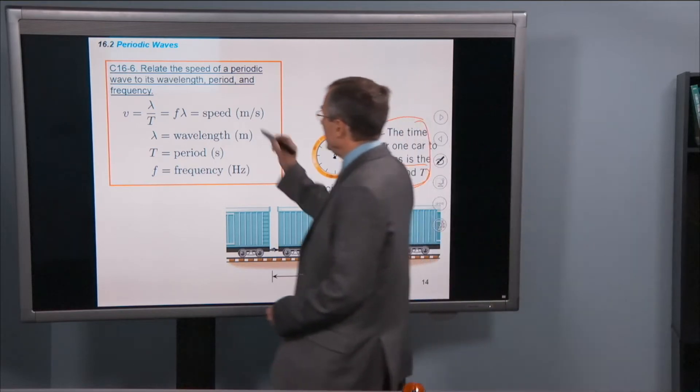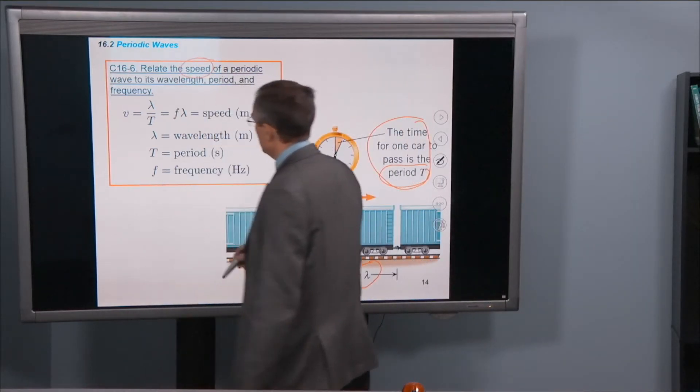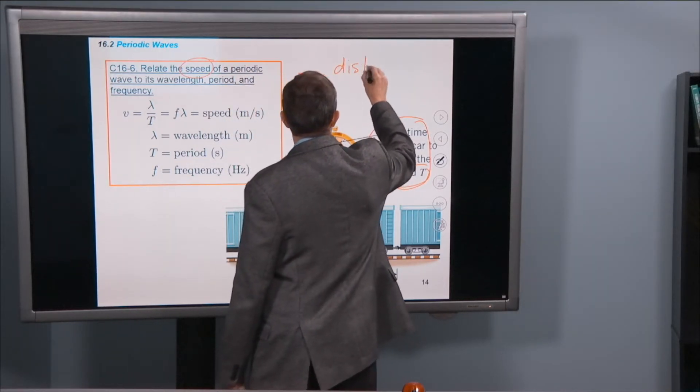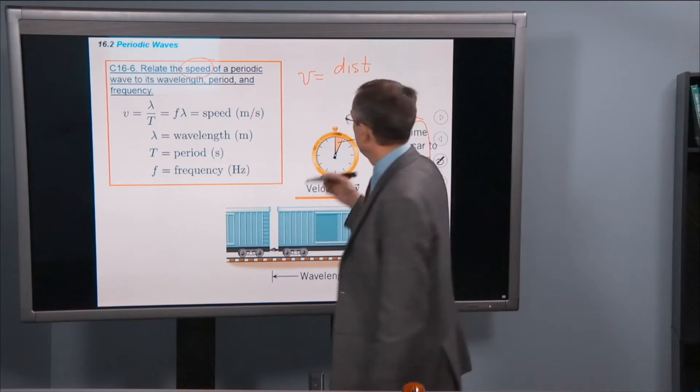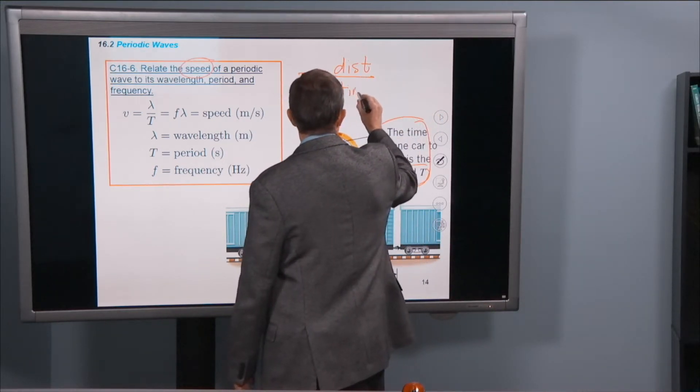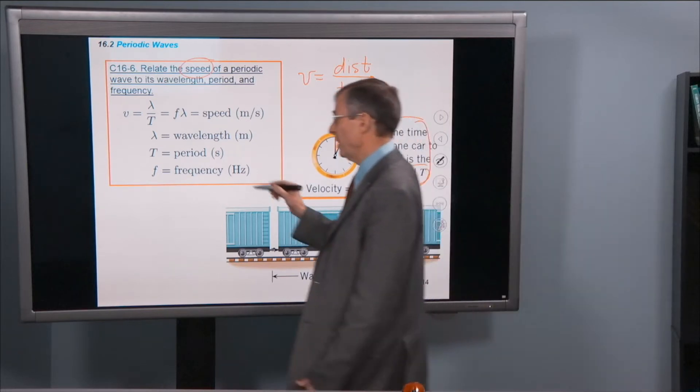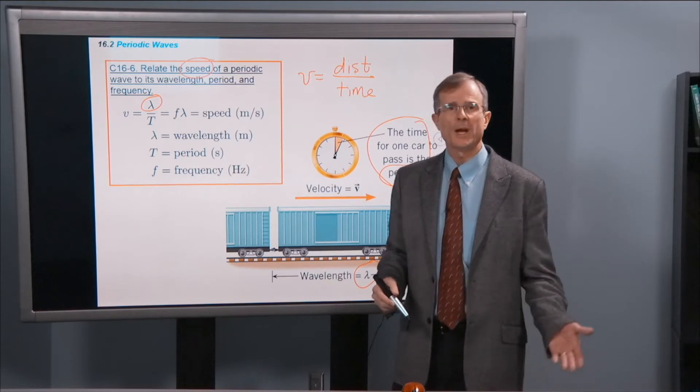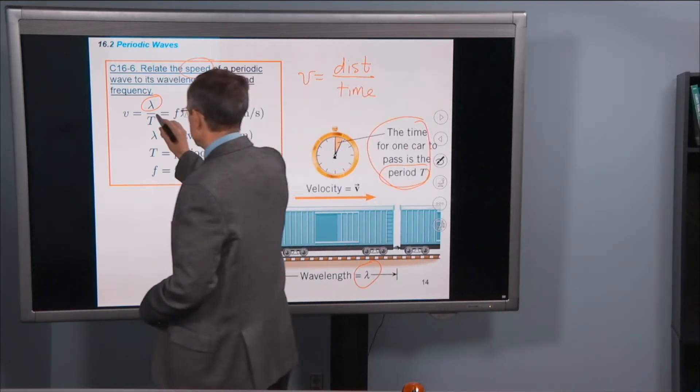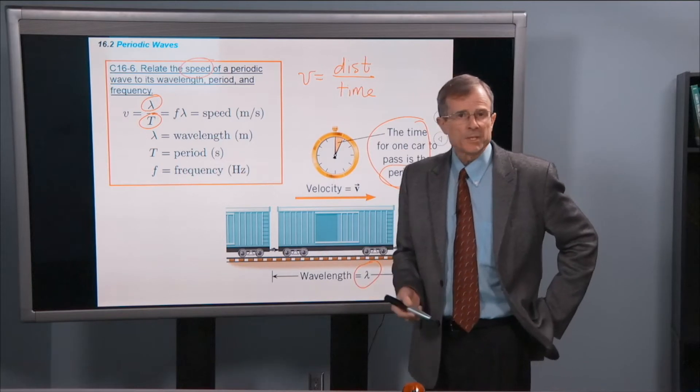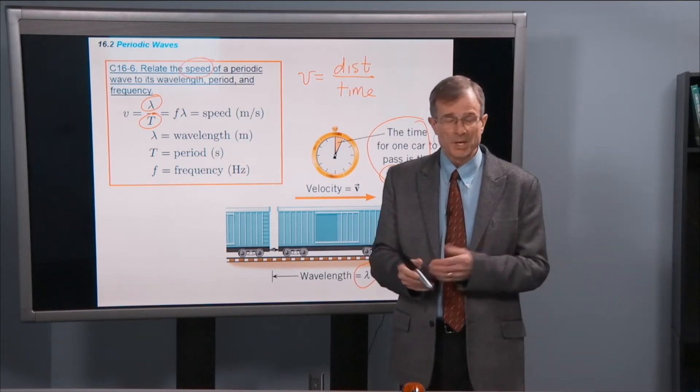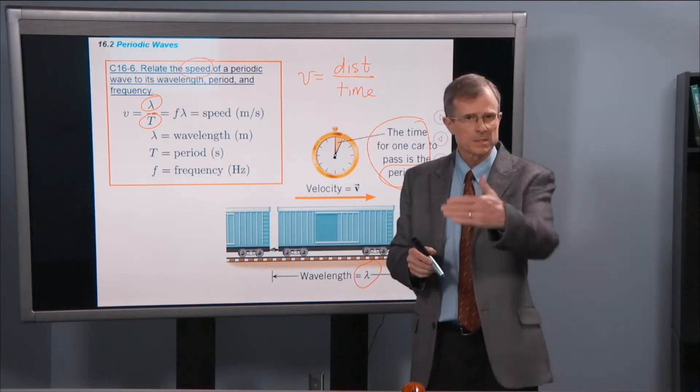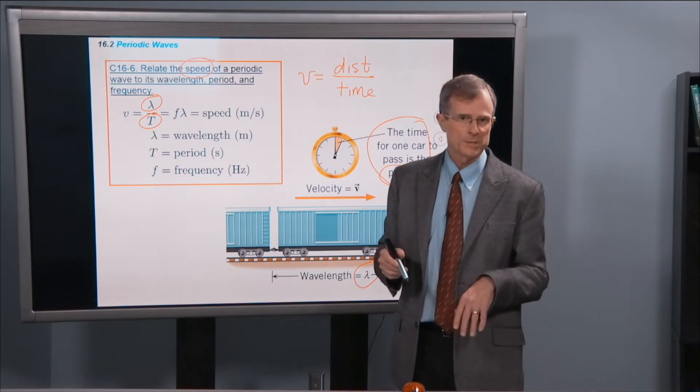So what this train does is in one period T, it travels a distance of one wavelength. And so if we want to know what the speed is, and that's what we do want to know, then it's going to be the distance traveled during one period divided by the time. Well, what's the distance traveled? Well, it's the wavelength. It goes one wavelength. And what's the time required to travel one wavelength? Well, it's the period. So v is lambda over T. Don't memorize it, you can memorize it if you want. It's so much easier just to think it through each time. The speed is distance divided by the time. Distance is the wavelength. Time is the period.